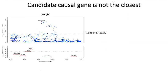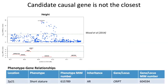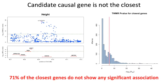Typically when we perform GWAS, we indicate the closest gene to the top SNP as the causal one, but we know that in many cases this is not true. For example, in this region associated with height, the closest gene to the top SNP is SOX5, but according to our TWMR results this gene doesn't show any significant effect on height. Instead, we found a significant effect for CRYPT, which is already known to be associated with a Mendelian form of short stature, suggesting the same gene also affects height in the general population. Overall, in 71% of cases, the closest gene does not show any significant association.